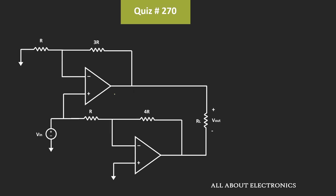Let's say the output of this first op-amp is equal to Va, while the output of this second op-amp is equal to Vb. And this total output voltage Vout is equal to Va minus Vb. So first of all, let's find the value of Va and Vb.